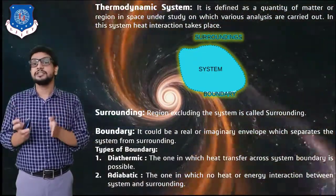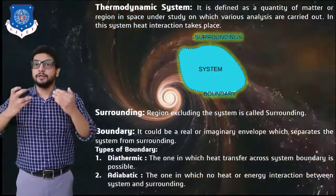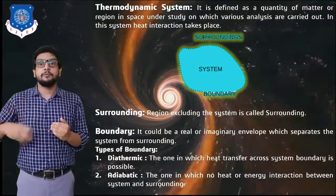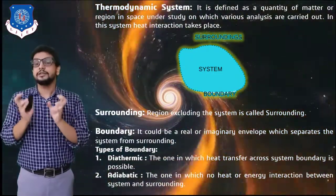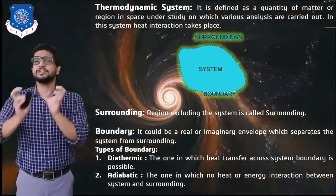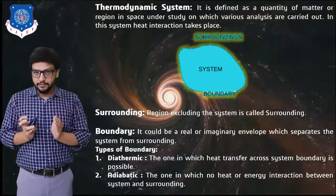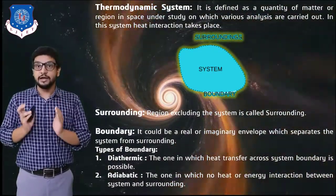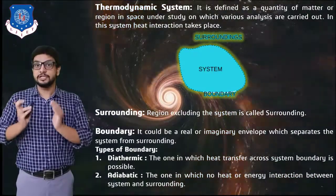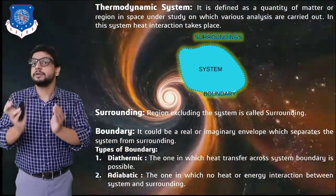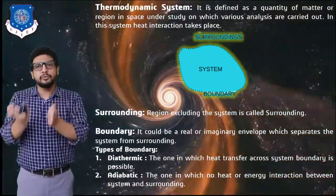Similarly, a system can be as large as an airplane, on which various operations like fabrication, welding, and spot fitting are performed. With respect to that, a thermodynamic system is one in which a heat interaction takes place between a system and its surrounding — for example, an internal combustion engine or an external combustion engine such as a steam turbine in which steam possesses heat energy. All this comes under the category of a thermodynamic system.